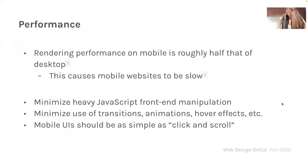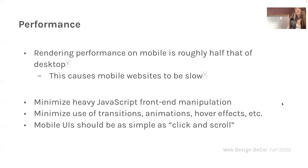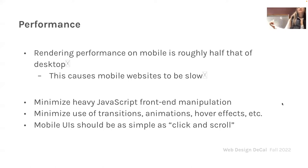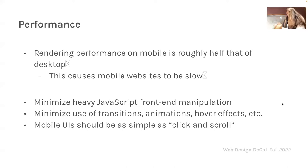In terms of performance, rendering on mobile is roughly half of desktop, causing mobile websites to be slower. To optimize: try to minimize heavy front-end manipulations using JavaScript, minimize the use of animations, transitions, and hover effects — they look nice but don't overdo it. Mobile UI should be as simple as click and scroll. Looking at a small screen is already challenging, so making it an easy and digestible experience is the goal.